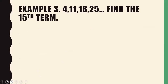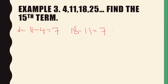Example number 3. We have 4, 11, 18, 25. Find the 15th term. First, we get the common difference: 11 minus 4 equals 7; 18 minus 11 equals 7; 25 minus 18 equals 7. So our common difference is 7.